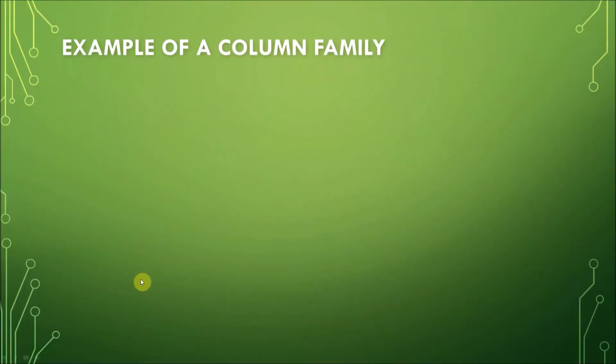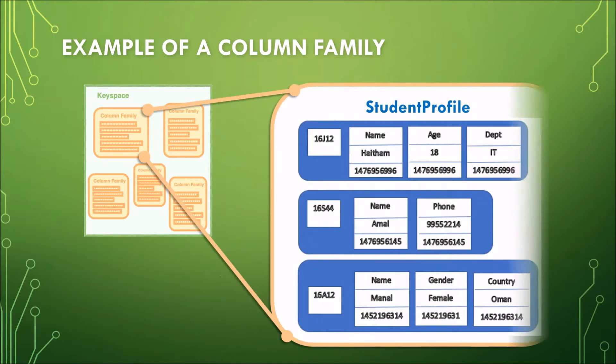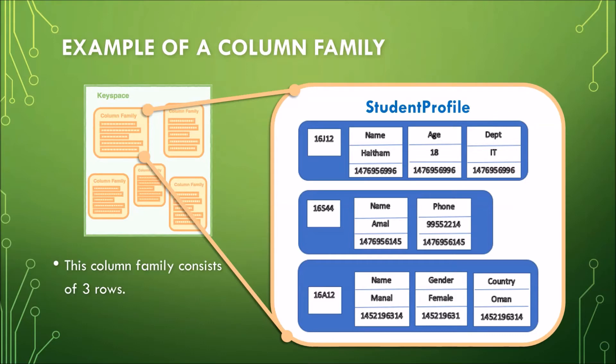Now, let's take a look at an example of a column family. The structure of a Column Store Database begins with a keyspace. Again, the keyspace contains all the column families. Column families are like tables in a relational model. So in this example, we have a student profile column family. This column family consists of three rows. So this is the first row, the second one, and the third row.